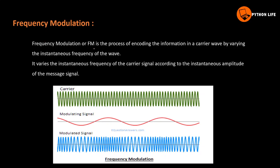Frequency Modulation is the process of encoding information in a carrier wave by varying the instantaneous frequency. It varies the instantaneous frequency of the carrier signal according to the instantaneous amplitude of the message signal.